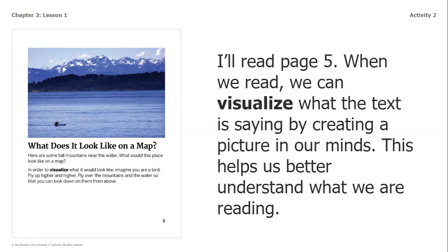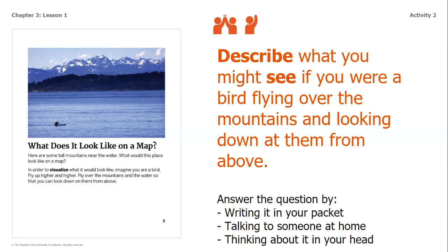What does it look like on a map? Here are some tall mountains near the water — what would this place look like on a map? In order to visualize what it would look like, imagine you are a bird. Fly up higher and higher, fly over the mountains and the water so that you can look down on them from above. Take a second to describe what you might see if you were a bird flying over the mountains and looking down from above.